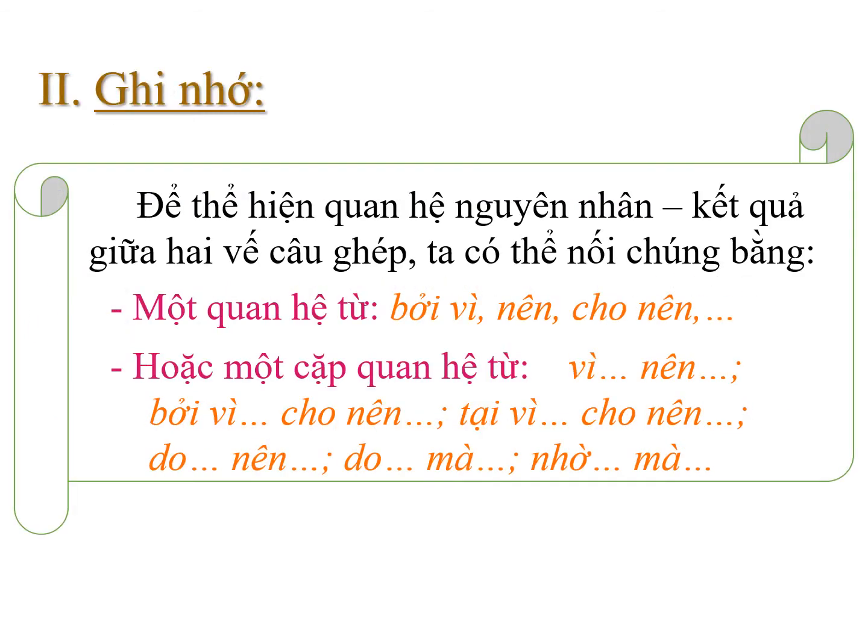Khi cô cho ta phân tích và tìm hiểu xong, chúng ta sẽ rút ra được một kết luận. Và kết luận đó cũng chính là phần ghi nhớ trang 33. Ghi nhớ như sau: Để thể hiện quan hệ nguyên nhân kết quả giữa 2 vế câu, ta có thể nối chúng bằng một quan hệ từ: bởi vì, nên, cho nên; hoặc một cặp quan hệ từ: vì...nên, bởi vì...cho nên, tại vì...cho nên, do...nên, do...mà, nhờ...mà.